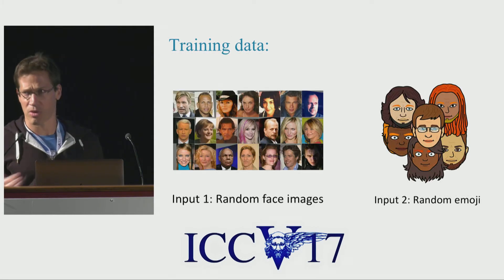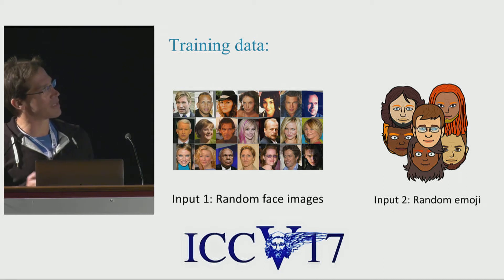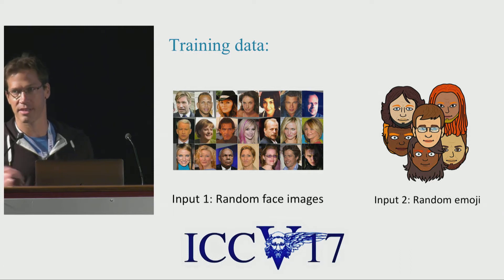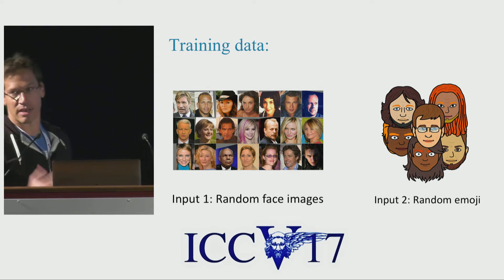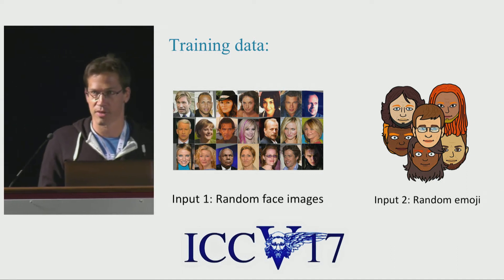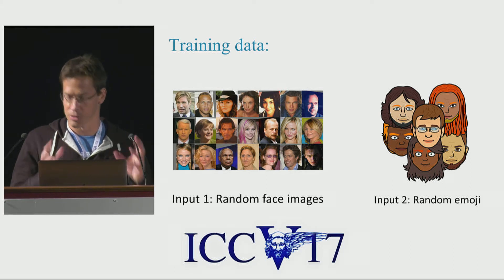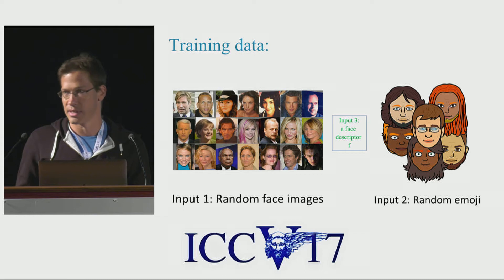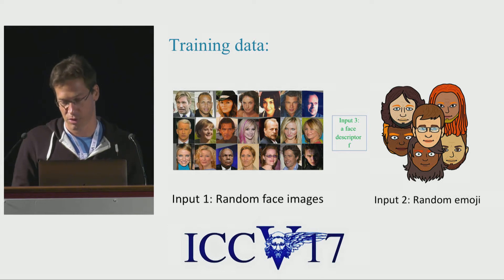We work in an unsupervised manner, which is unlike the second work we've seen in this session. We do use GANs and use a lot of them. The inputs in our system are a large set of unlabeled faces and a large set of cartoon faces. We need something else to align the two spaces — a third input, which is a pre-trained network. In this case, we use the DeepFace network for this task.